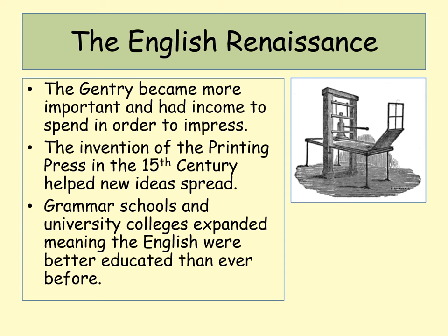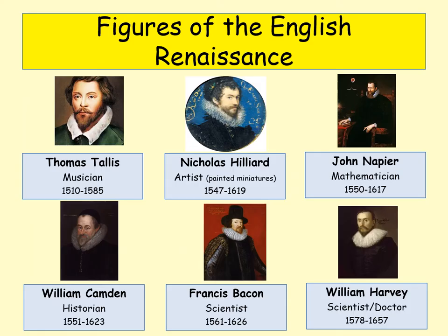The gentry became more important and were very keen to show off their wealth. Because of the rise of the gentry, there are some key figures around the Renaissance: Thomas Tallis, a musician; Nicholas Hilliard, a famous artist — miniature portraits were very fashionable, sometimes worn in necklaces. There's John Napier, a mathematician; William Camden, a historian who carefully referenced sources; scientists like Francis Bacon; and William Harvey, who discovered that blood circulates around the body. This was really a rebirth of learning, seen widely across Europe and in England during this time.